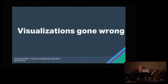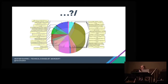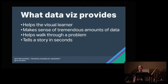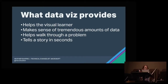We've all probably seen visualizations gone wrong — way too many variables and you have no idea what's going on, no title, or just all over the place. There are different things we can take into account when creating visualizations to make them better so people can actually understand what's going on. The main goal is that if you look at a visualization, within about 10 seconds you can tell what's going on and make an assumption about your data. It helps visual learners, makes sense of tremendous amounts of data, puts it into an understandable format, helps you walk through a problem with exploratory analysis, shows where things are outliers, and can tell a story in seconds.